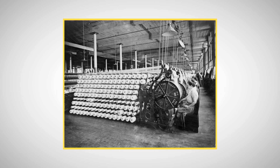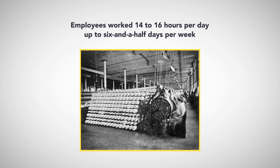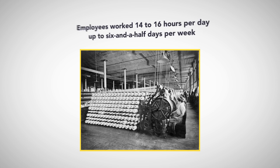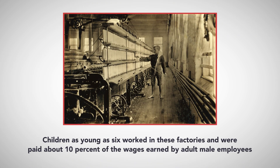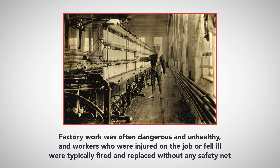Working conditions in the typical Industrial Revolution-era factory were deplorable. Employees worked 14 to 16 hours per day, up to six and a half days per week. Wages were low, driven down by the constant supply of new workers migrating to cities from farms, and women were typically paid less than half the wages earned by men. Children as young as six worked in these factories and were paid about 10% of the wages earned by adult male employees. Factory work was often dangerous and unhealthy.